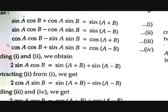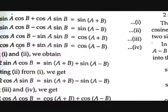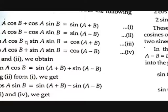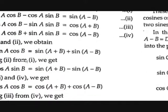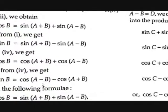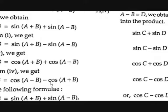And then, what if we subtract equation 3 from equation 4? If you do 3 minus 4, you get minus 2 sin A sin B, but if you do 4 minus 3, you get 2 sin A sin B = cos(A−B) − cos(A+B). So we got 4 new formulas just by adding and subtracting.